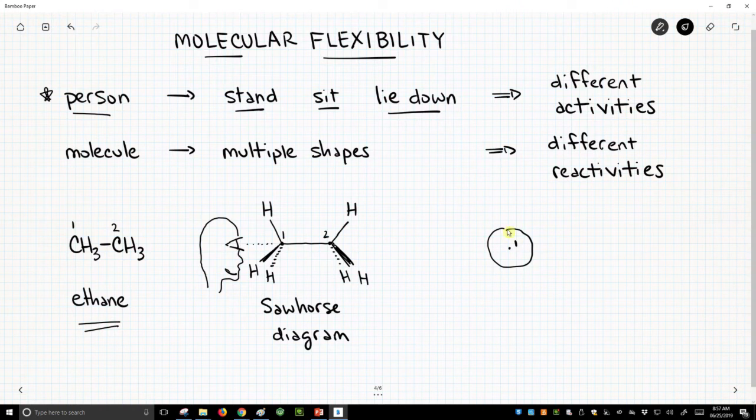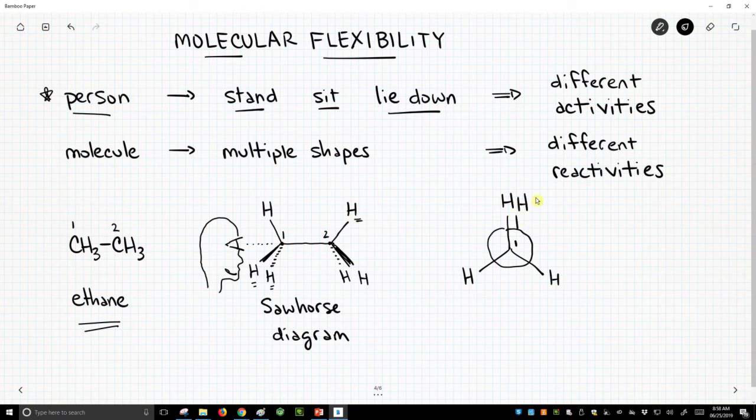But off of carbon 1, pointing up would be a hydrogen. Pointing to our left would be this particular hydrogen, the hash bond. Coming off to our right would be the bolded bond, the wedge bond. And then directly behind those, this hydrogen on carbon number 2 would also be kind of hidden behind that top hydrogen. And the other hydrogens would also be hidden behind the front hydrogens on carbon 1. So these are the hydrogens on carbon 2.